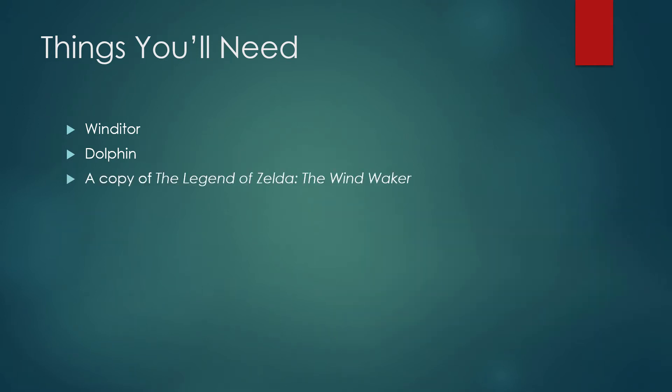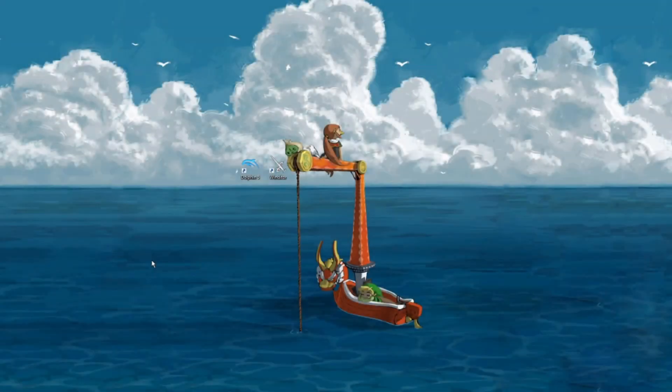Finally, you will need a copy of The Wind Waker. I'll provide a link to the Dolphin website's guide on how to legally rip your own backup copy of the game, once again in the description. Once you have all three of those things, we can start setting you up to use Windeter. In order to make it easier and faster to test out changes, Windeter works with the game files outside of the ROM. This allows the editor to use the game's models to show where actors are, and makes it possible to use Dolphin to quickly playtest changes to a map.